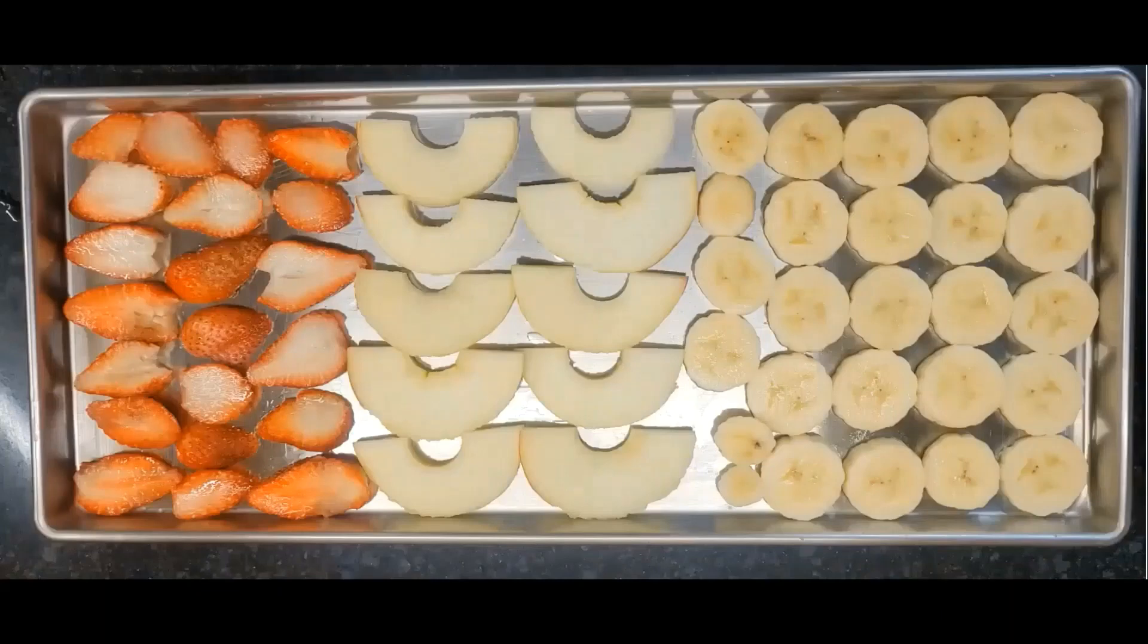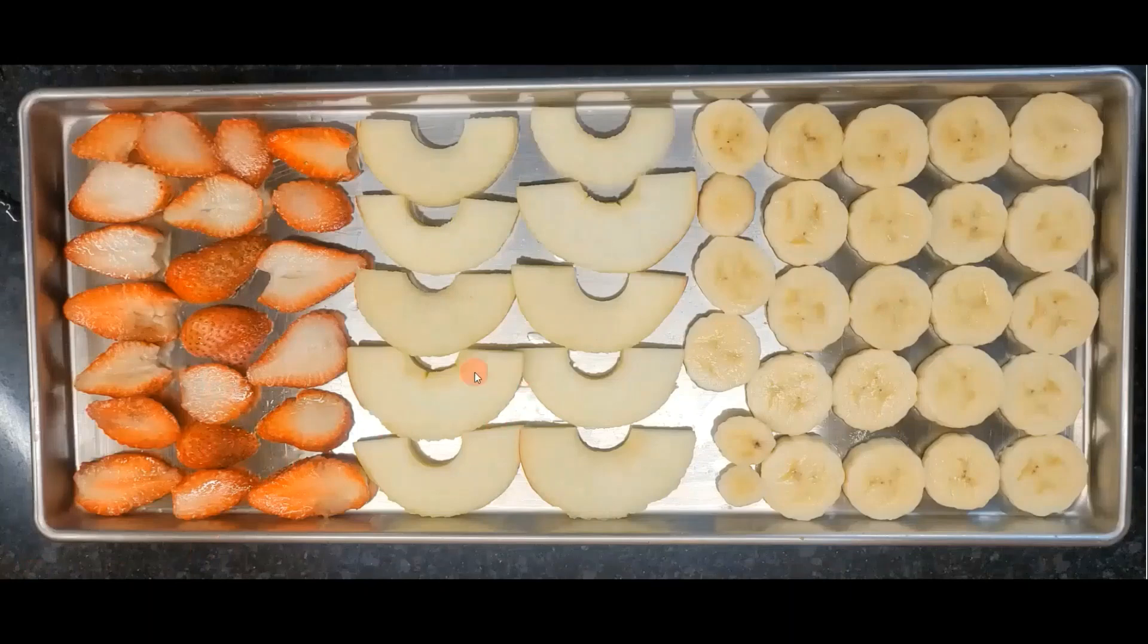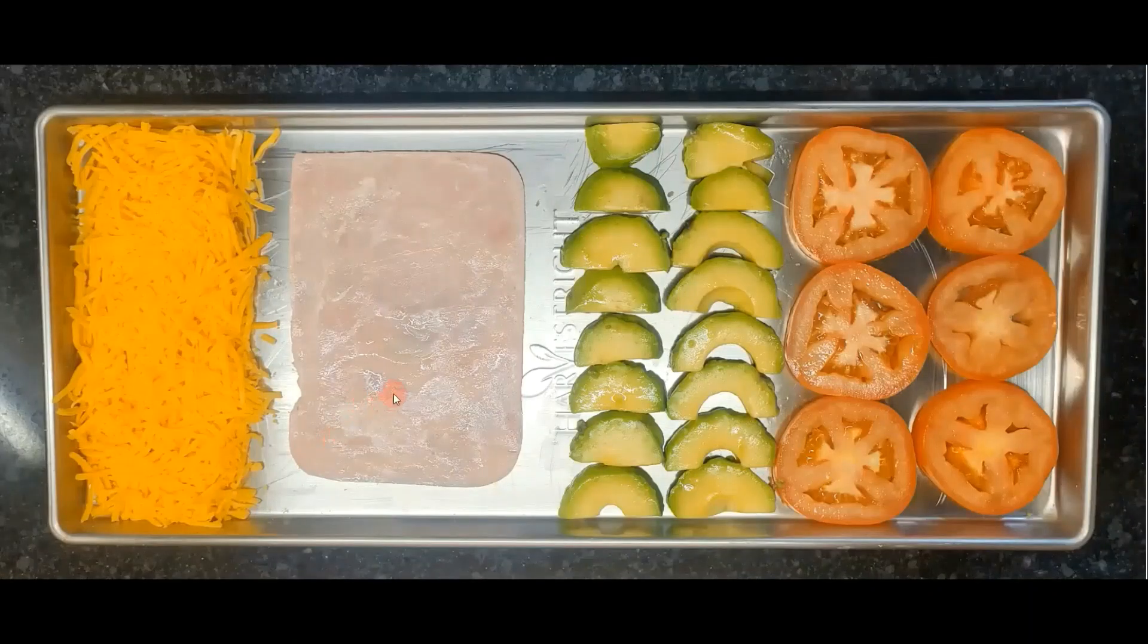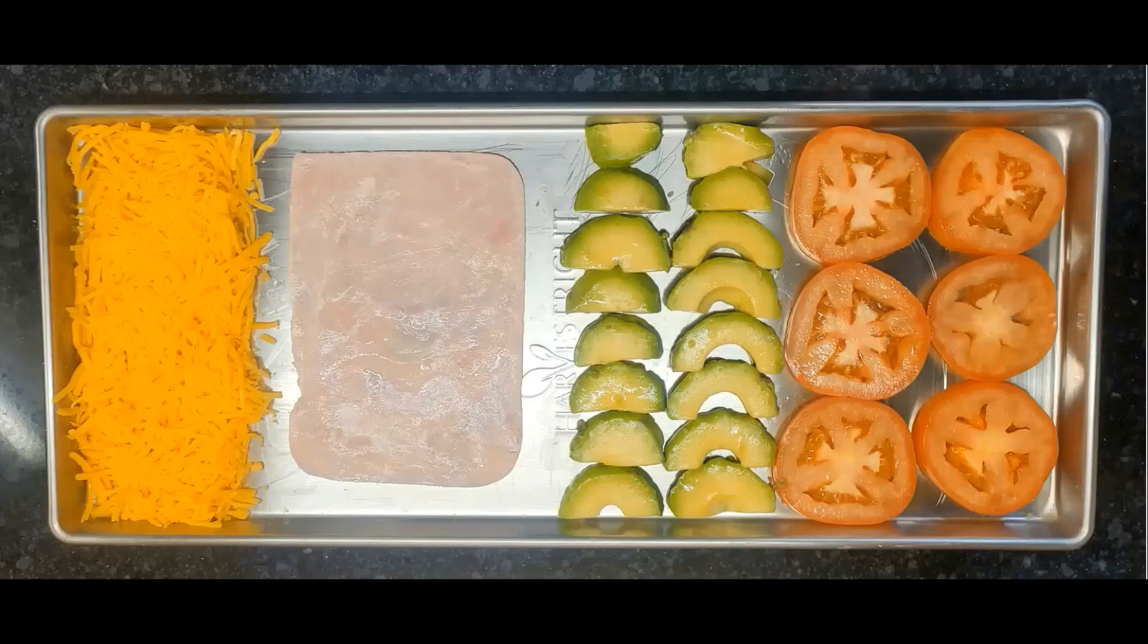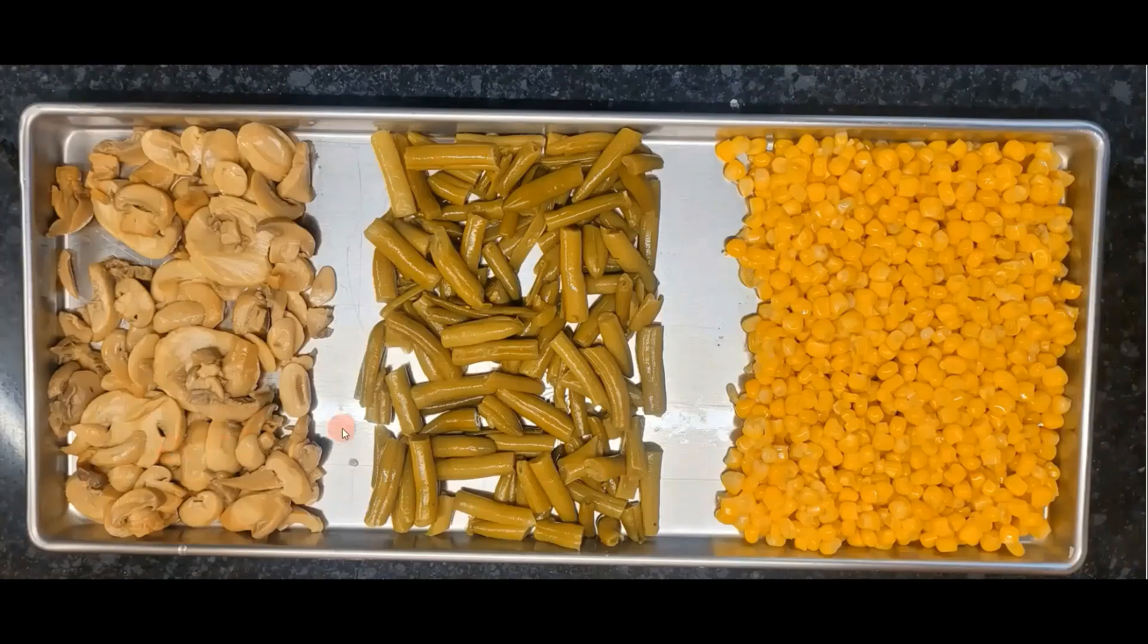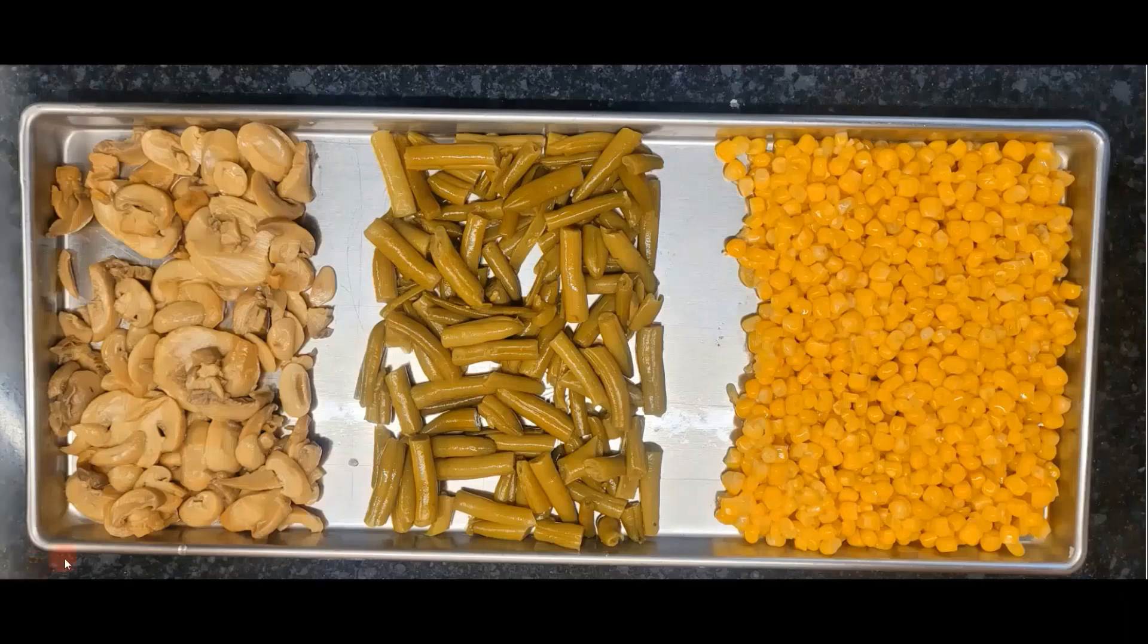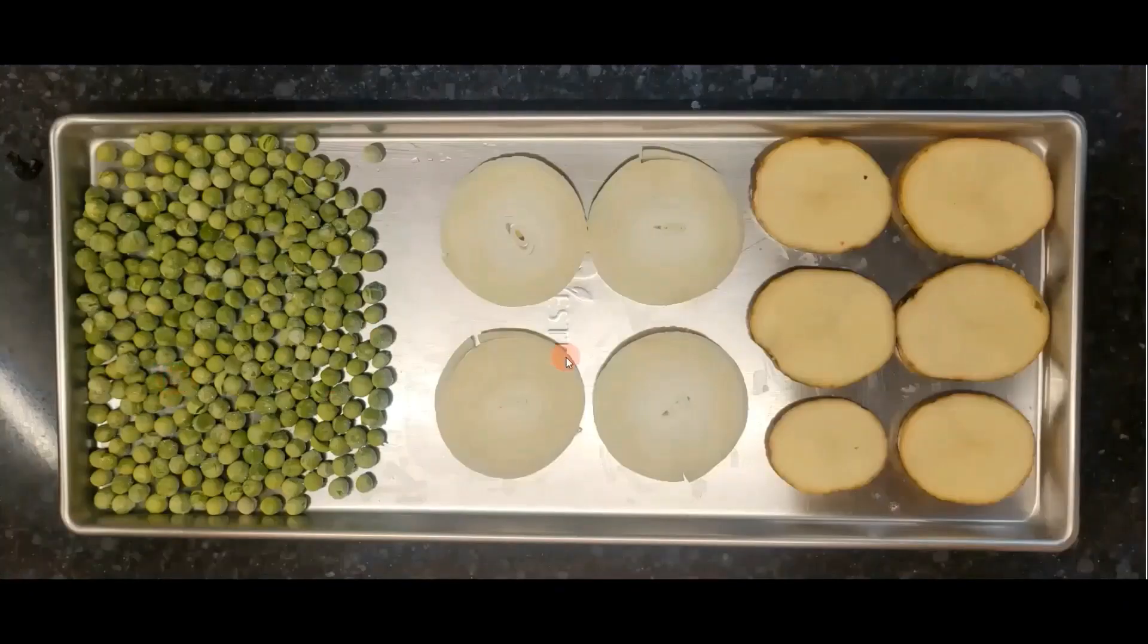This time I prepared multiple different foods. Most of these, any of the fruits that were known to oxidize into brown, were all dipped in fruit fresh, one teaspoon per cup. So I have my strawberries, apples, and bananas. I have cheese, a piece of ham sliced meat, avocados which are in fruit fresh, tomatoes, mushrooms, string beans, corn, peas, onions, and sliced potatoes which were also in fruit fresh.